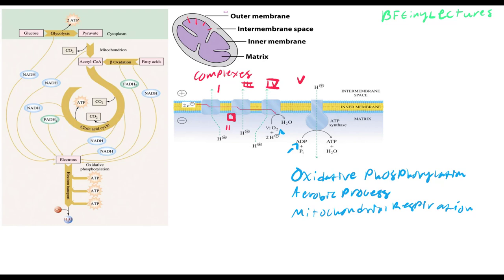The electron transport chain occurs in the inner membrane — the ETC takes place in the inner membrane. Oxidative phosphorylation occurs in the ATP synthase. Now let's briefly talk about the ETC before we get into the details.